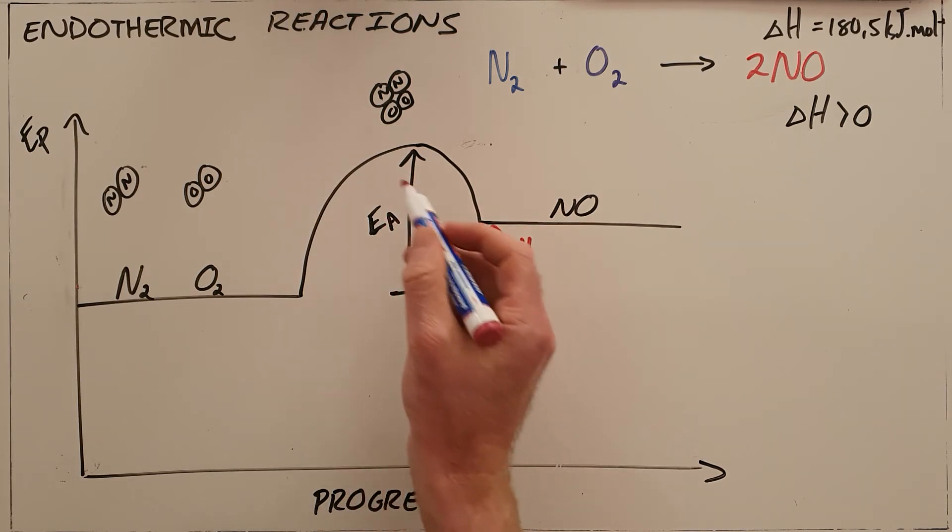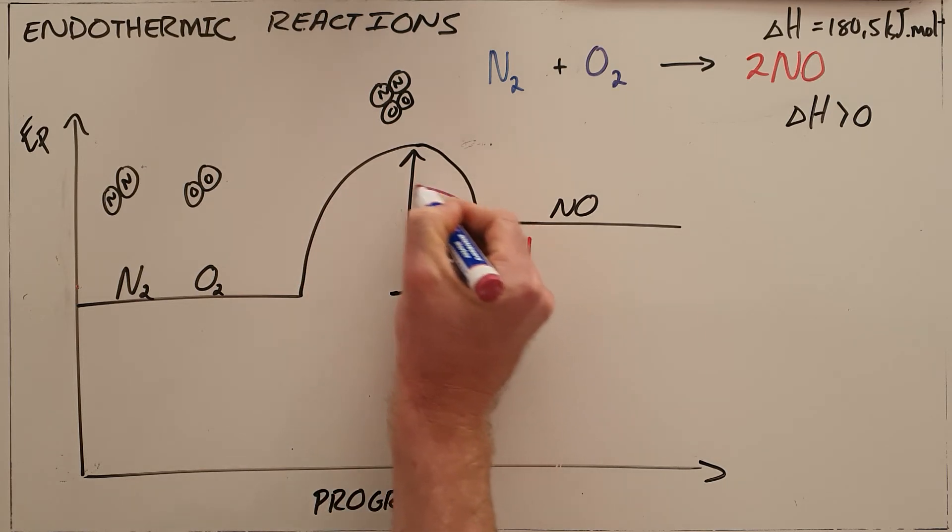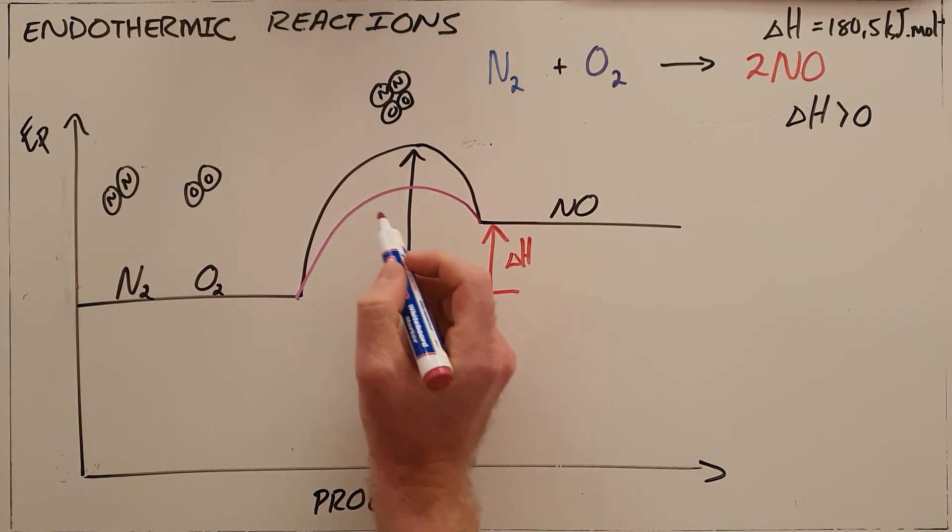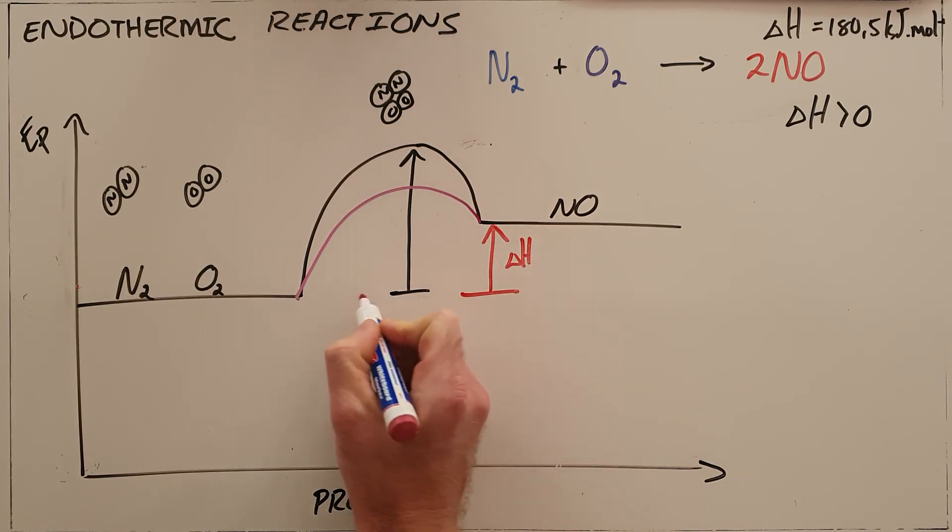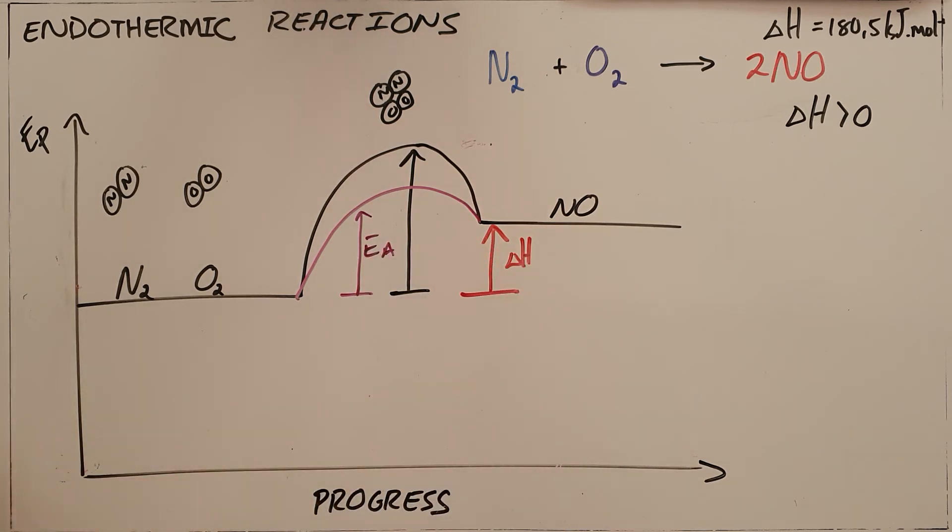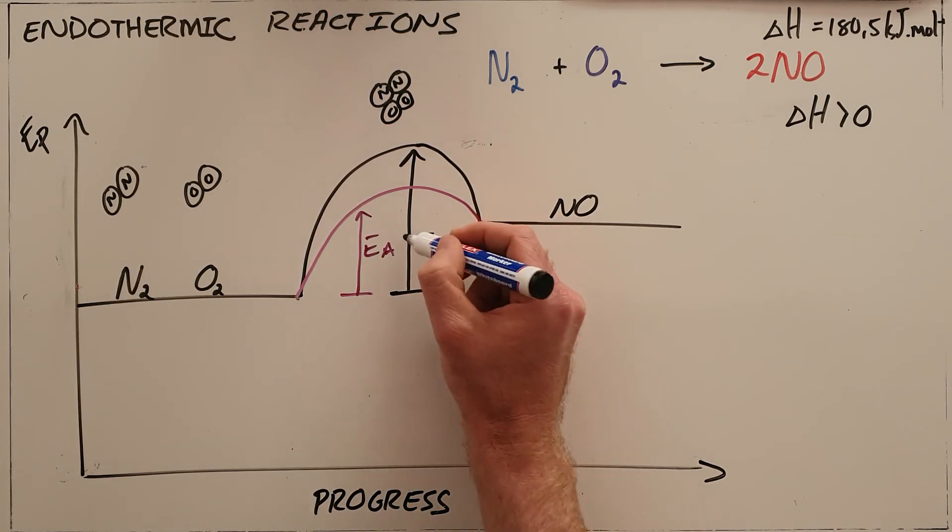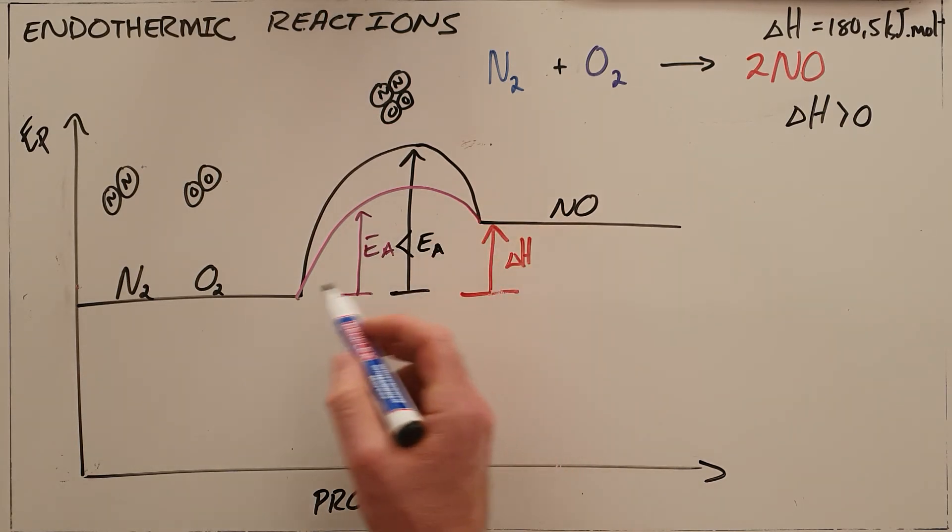The catalyst provides an alternate path for this reaction to happen. As we can see, the activation energy for the catalyst—the catalyzed activation energy—is less than the original activation energy, meaning that less energy is required for this reaction to happen, which makes the reaction happen easier, faster, or more successfully.